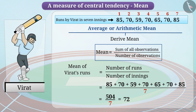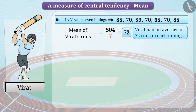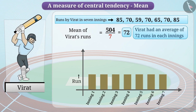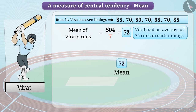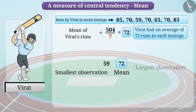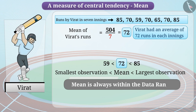We deduce that the mean of Virat's runs is 72, meaning he had an average of 72 runs per innings. The mean tells us that if Virat had scored equal runs in each innings, he would have scored 72 runs each time. We see that 72 lies between the smallest observation 59 and the largest 85, confirming that mean is always within the data range.